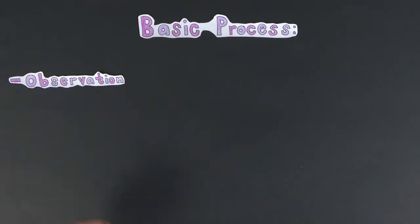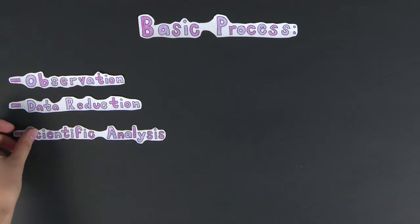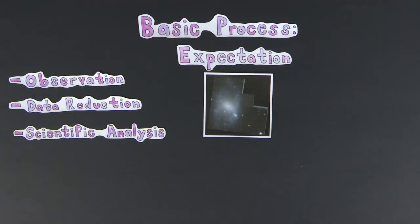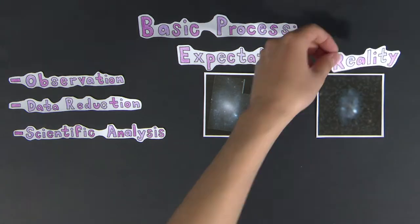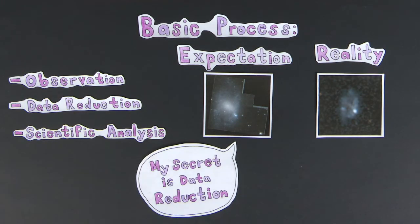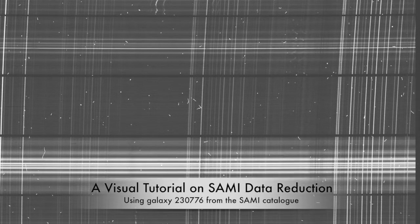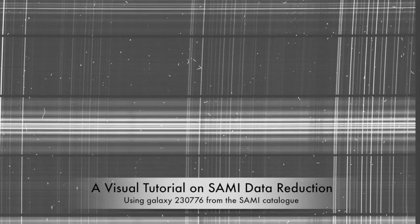Once the SAMI data is collected, it goes through a data reduction process, which transforms the raw data from the telescope into calibrated information that can be scientifically analysed. The aim of data reduction is to remove unwanted signal, such as emission from the Earth's atmosphere and distortions in the instrument from the galaxy spectra. The following overview demonstrates the basic process used for integral field spectrographs, such as a SAMI instrument. The relevant packages that are used to achieve this can be downloaded via the links in the description box below this video.